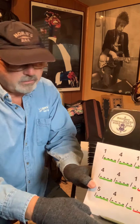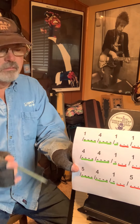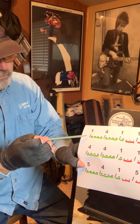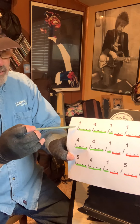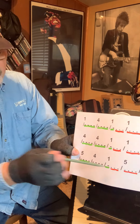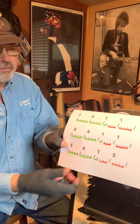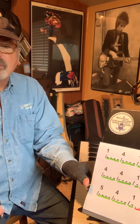So when we talk about 12-bar blues, we're talking about 4 beats per measure, 4 beats per measure, and there are 12 measures. That's the structure of it — 4 beats per measure.